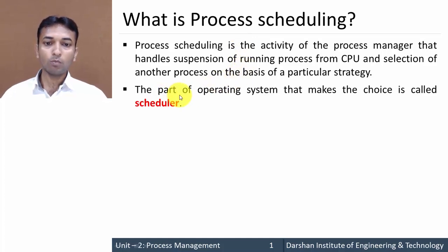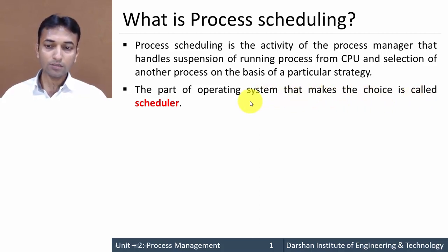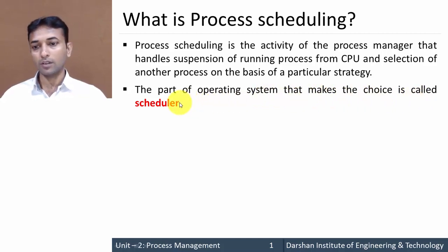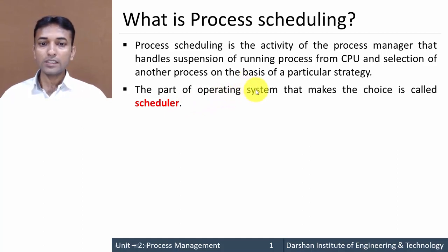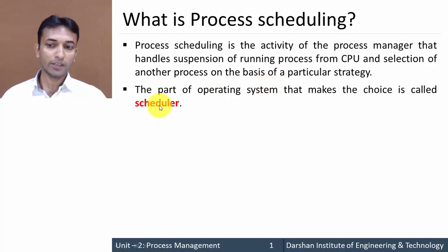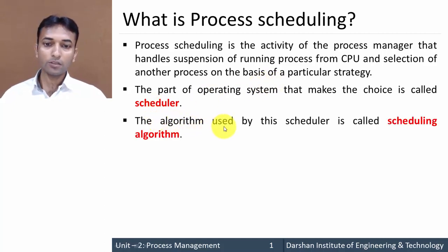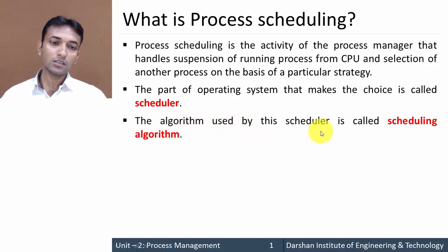The part of the operating system that makes the choice of a new process is known as the scheduler — the part of the OS that selects the new process to be executed. The algorithm that is used to select a new process is nothing but a scheduling algorithm.